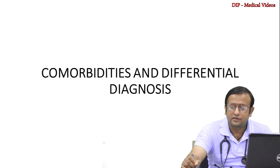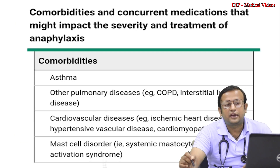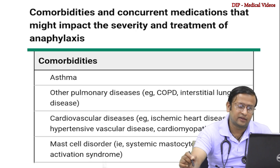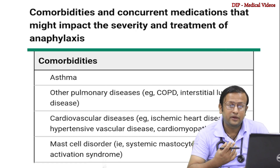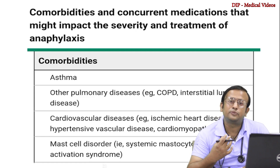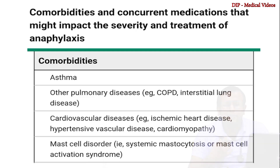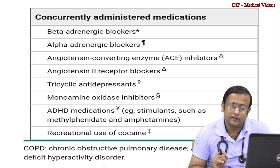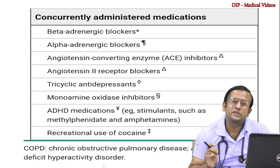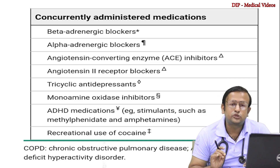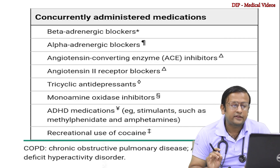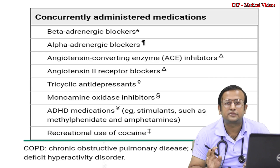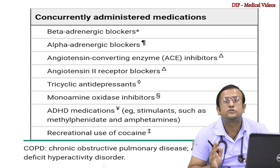Comorbidities and concurrent medications may impact the severity and treatment of anaphylaxis. These include asthma, other pulmonary diseases like COPD and interstitial lung disease, cardiovascular disease like ischemic heart disease, hypertensive vascular disease or cardiomyopathy, and mast cell disorders such as systemic mastocytosis or mast cell activation syndrome. Currently administered medications to note include beta-blockers, alpha-adrenergic blockers, ACE inhibitors, angiotensin 2 receptor blockers, tricyclic antidepressants, monoamine oxidase inhibitors, ADHD medications such as methylphenidate and amphetamines, and recreational cocaine use.